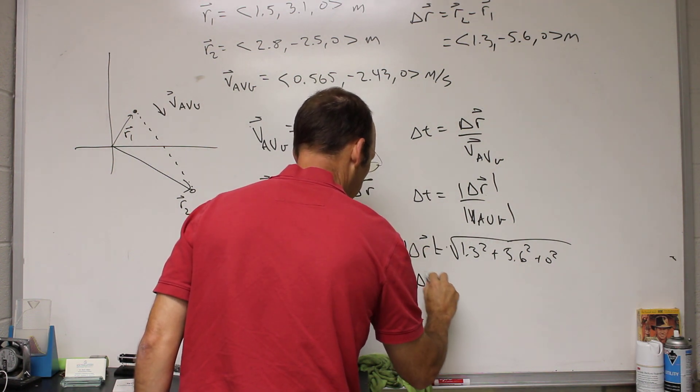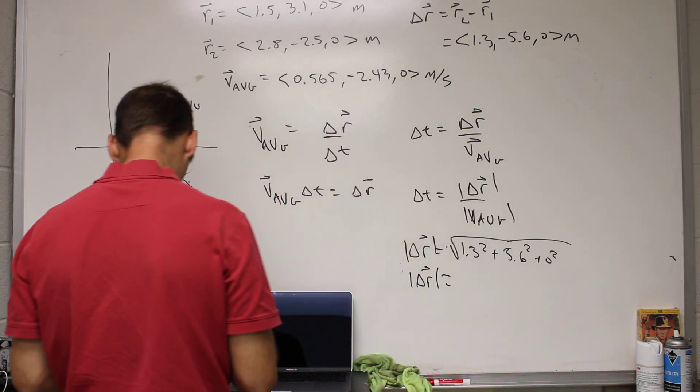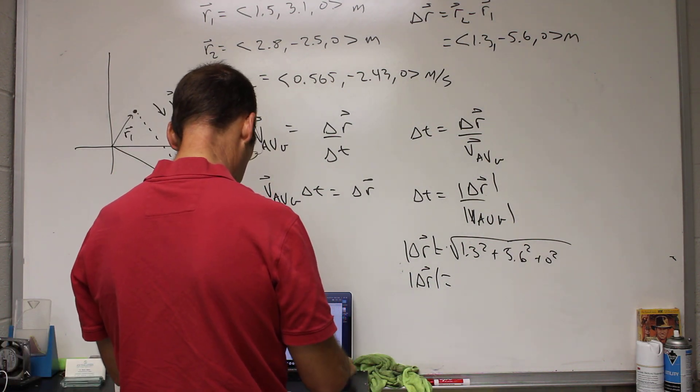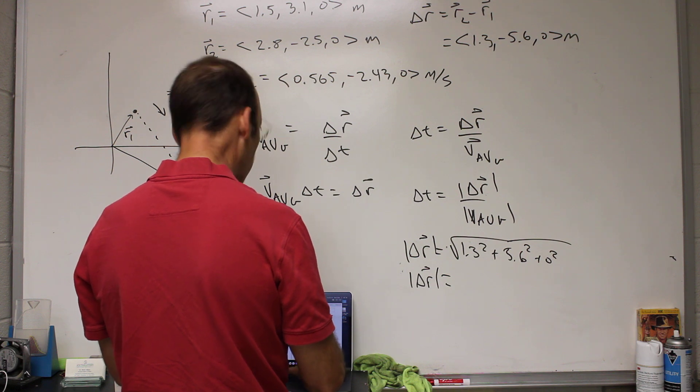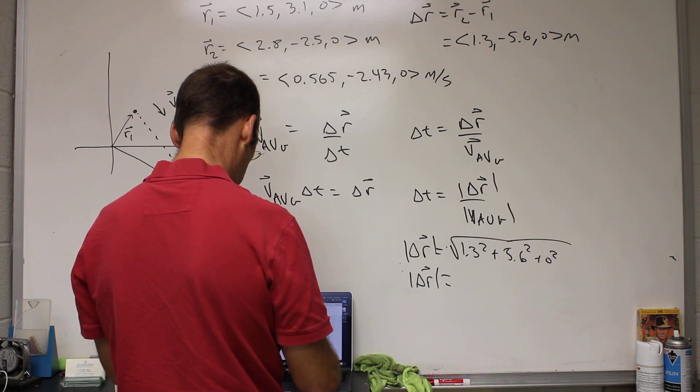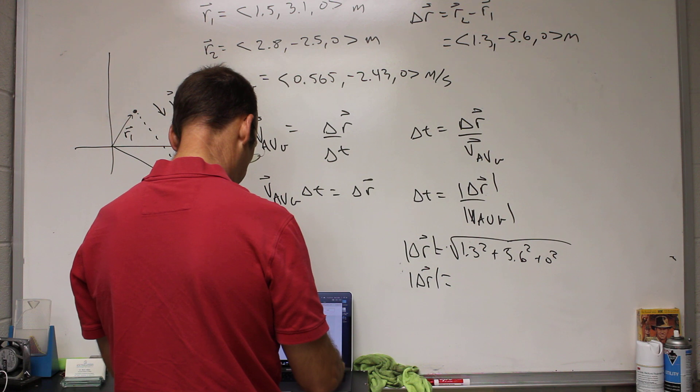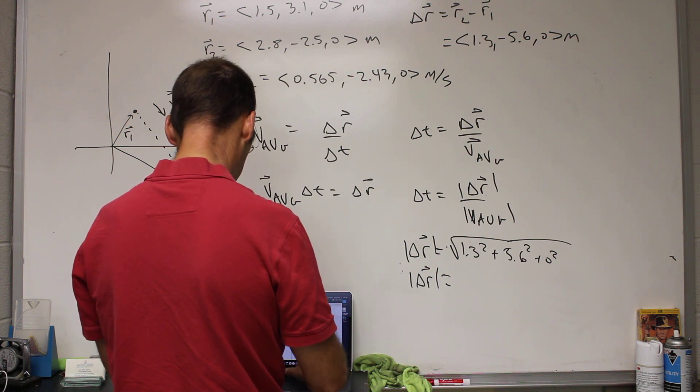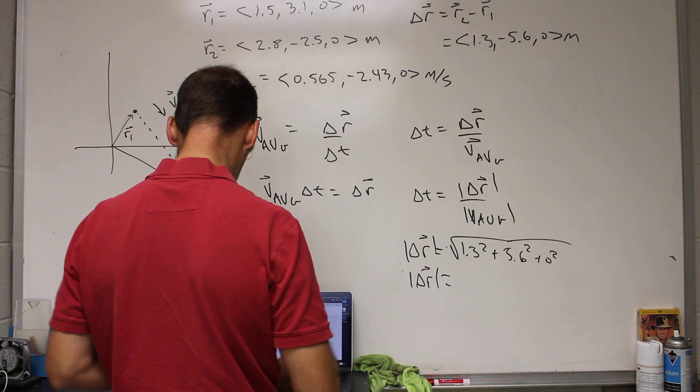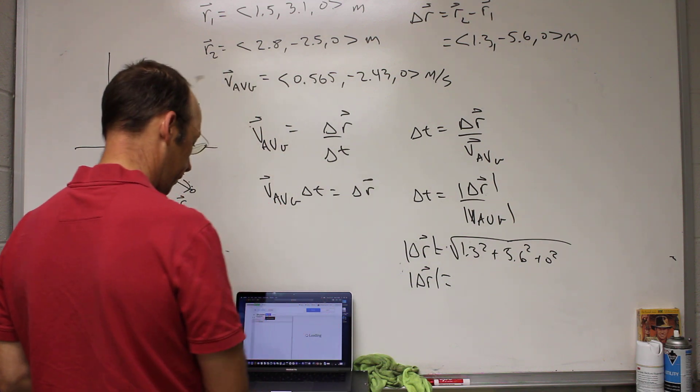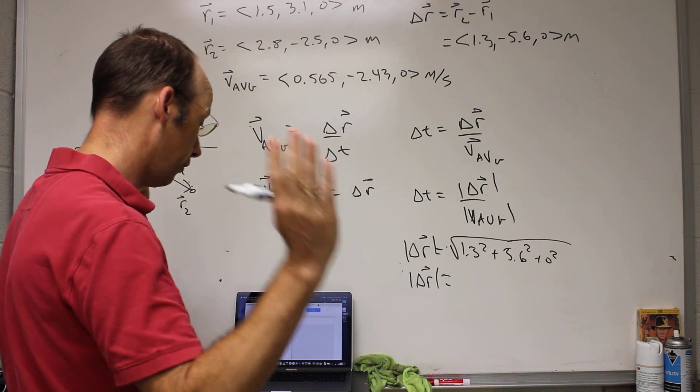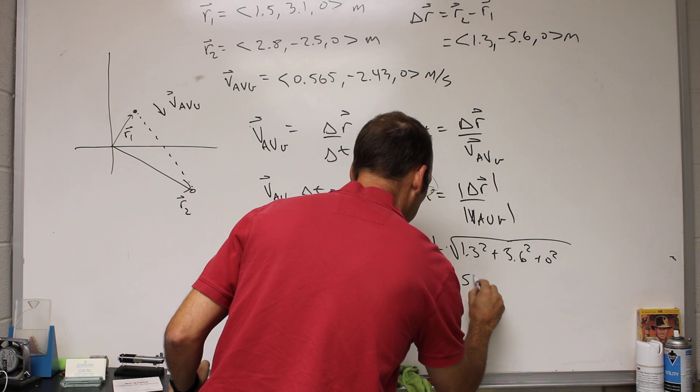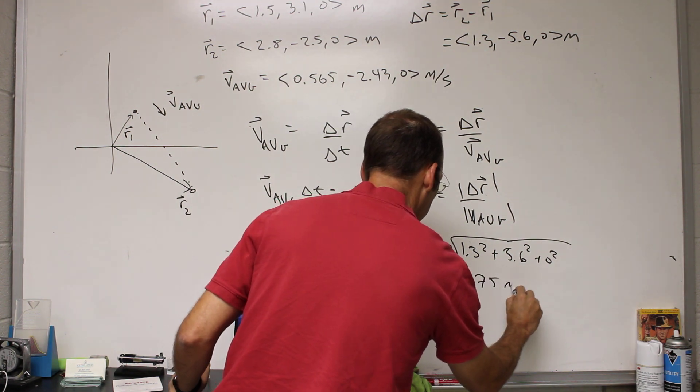I'm going to use Python here to just calculate this real quick. So let's say dr equals vector 1.3, negative 5.6, 0. And then I'll say print the mag of dr. Using Python's calculator, completely legitimate. So I get 5.75 meters.